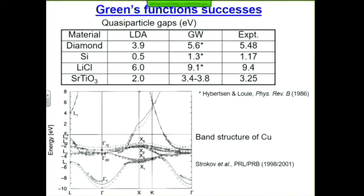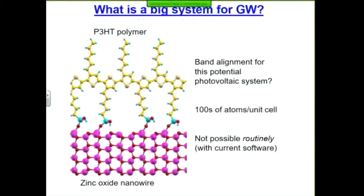So this GW stuff seems wonderful — why aren't we all using it every day? Why don't I use it on my polymer system, which has about 100 atoms per simulation cell? It's not possible to do it with current software routinely. If I wanted to do this with publicly available software, it would probably use up all my supercomputing time for the entire group just to run one or two iterations — which is not where we want to be.